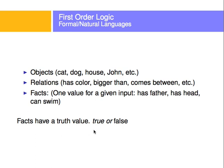Facts have a truth value — they're true or false. For example, seven people died yesterday: that's a fact, and it can be a false fact, but it's still a fact. A relation could be that Jeremy was the father of one of those people — that's a relationship. And objects are the people and objects in the world.